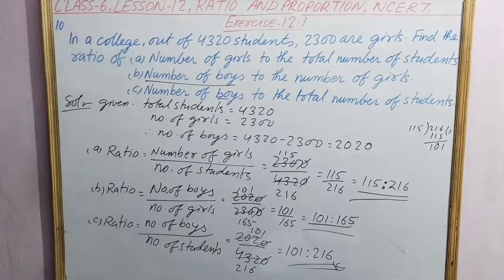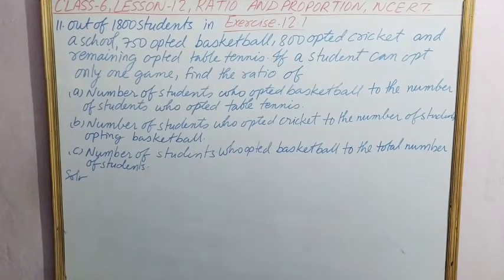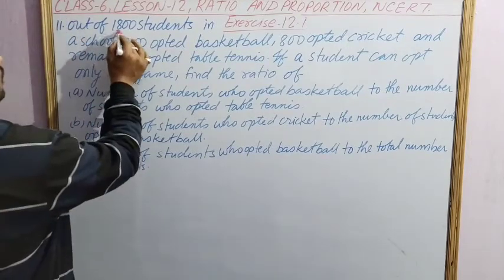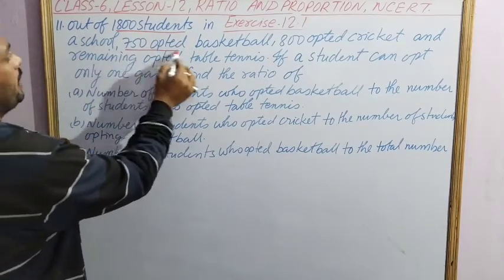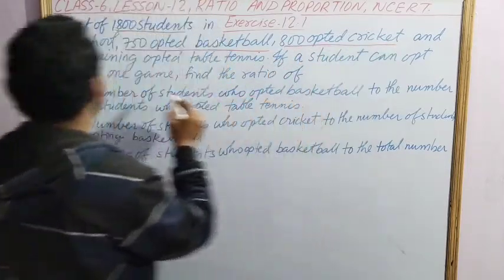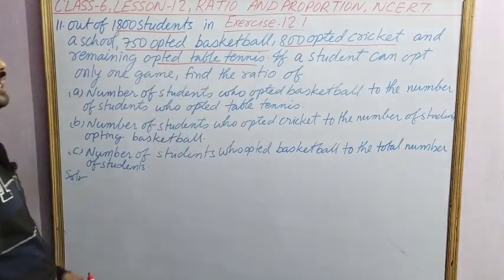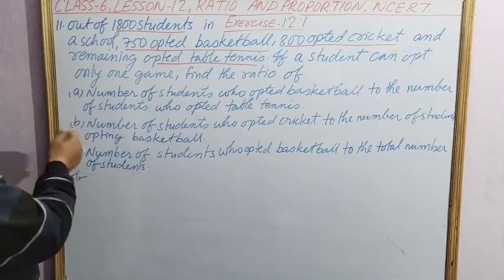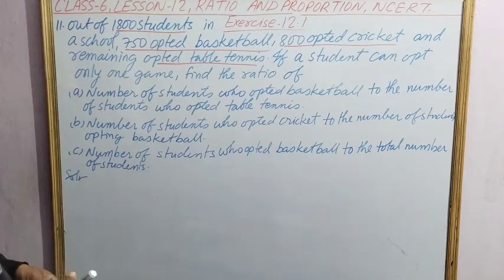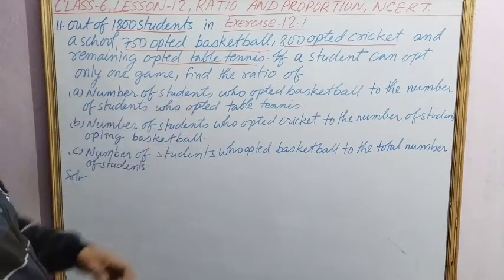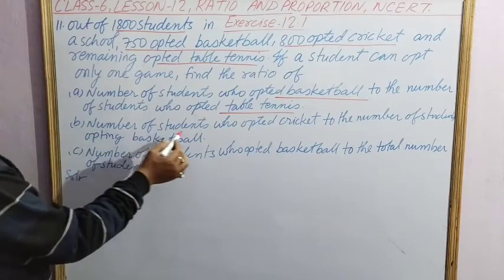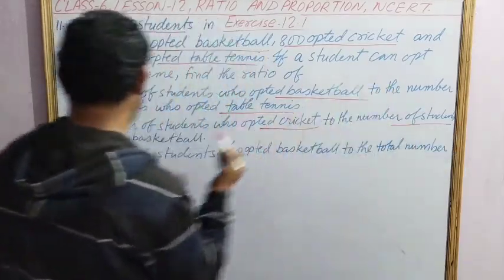Next, Question Number 11 says: out of 1800 students in a school, 750 opted basketball, 800 opted cricket, and remaining opted table tennis. If a student can opt only one game, find three ratios: first, number of students who opted basketball to those who opted table tennis; second, number of students who opted cricket to total number who opted basketball; third, number of students who opted basketball to total number of students.